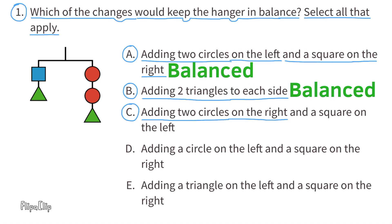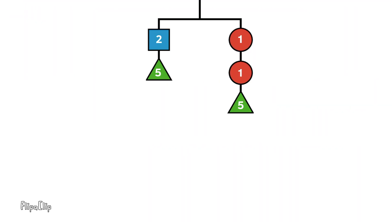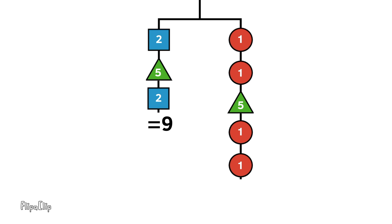C: Adding two circles on the right and a square on the left. Adding two circles on the left is like adding 2, and adding a square on the left is also adding 2, so we'd be adding 2 to both sides. The left side totals 9 and the right side totals 9, so this hanger would also be balanced.